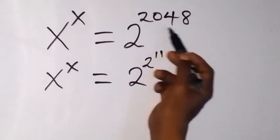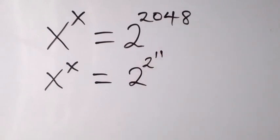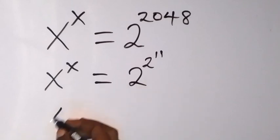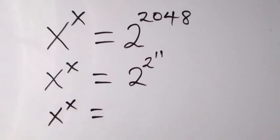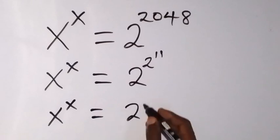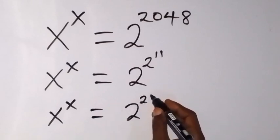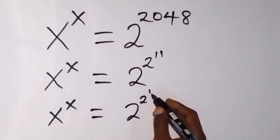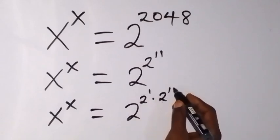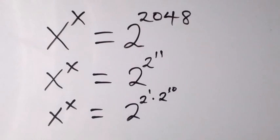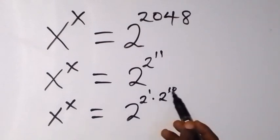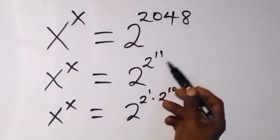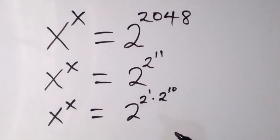2 raised to power 11 gives us the same thing as 2048. We can separate and break this down: x raised to power x equals 2 raised to power 2, then raised to power 1, multiplied by 2 raised to power 10, because from the law of indices we can add these together to give us 2 raised to power 11.